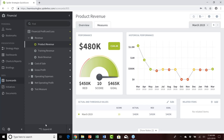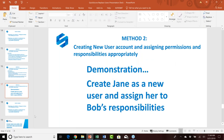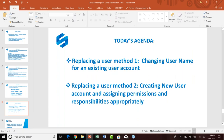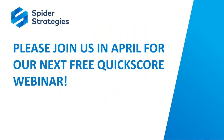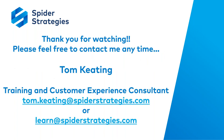Hopefully that is all clear. Let's review what we covered today: method one is changing a username for an existing account to replace a user, and method two is creating a new user account and assigning permissions and responsibilities appropriately. Please join us again next month in April for our next free QuickScore training webinar. Thank you for being here and watching. You can contact me, Tom Keating, at tom.keating@spiderstrategies.com or our education department at learn@spiderstrategies.com.